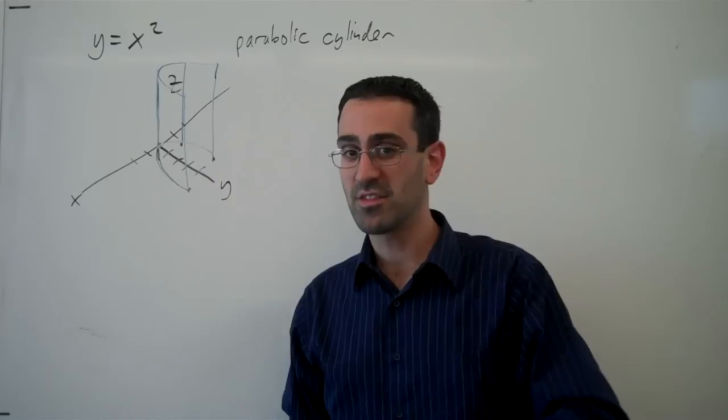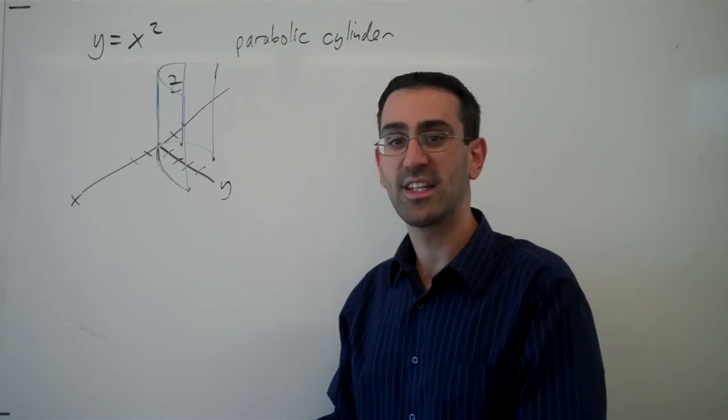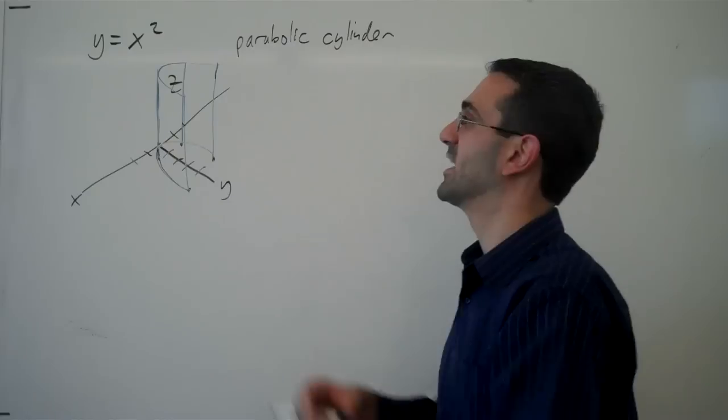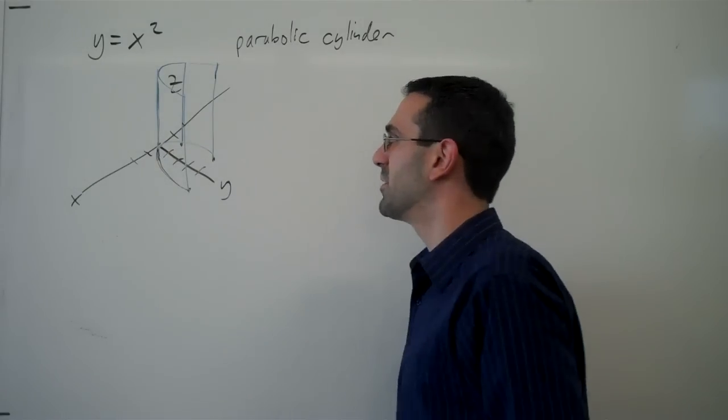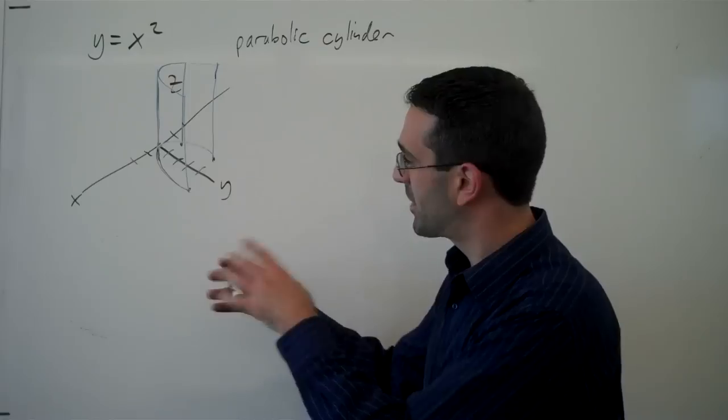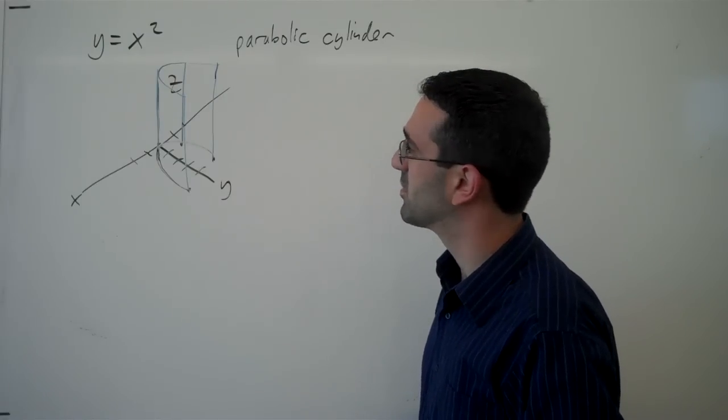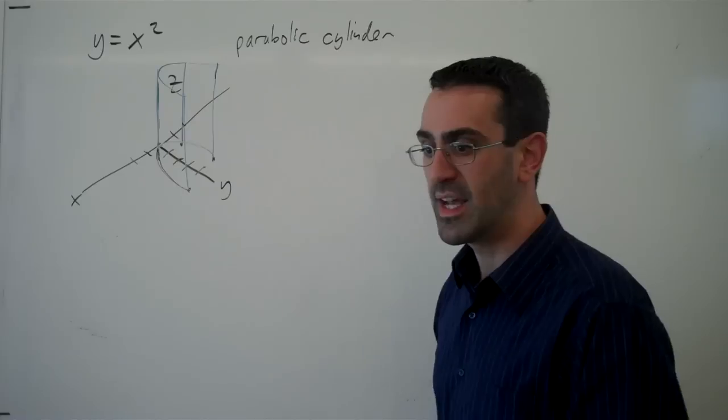Now what you usually think of cylinders is technically a circular cylinder, right? Where you have a circle that extends in all directions. And so there is a parabolic cylinder where you have a parabolic relationship in x and y extending for all values of z.